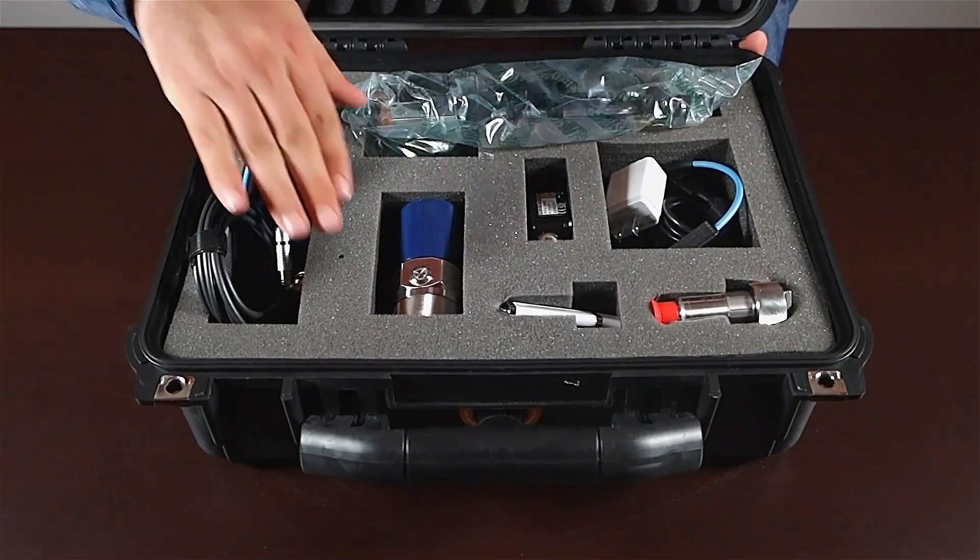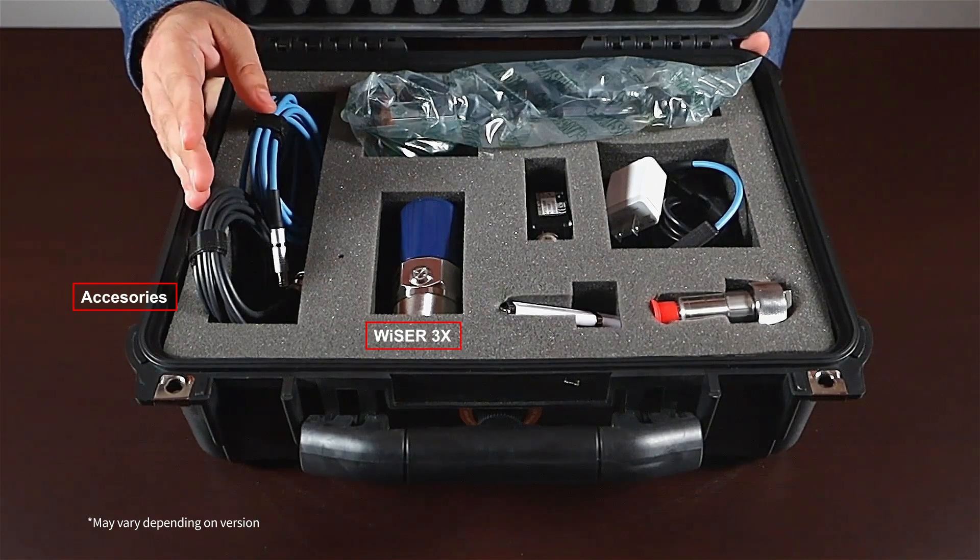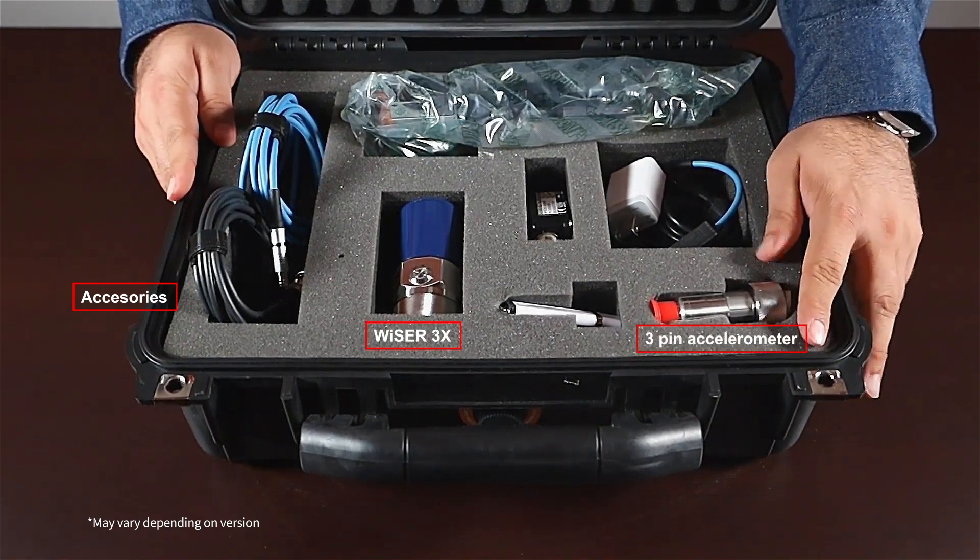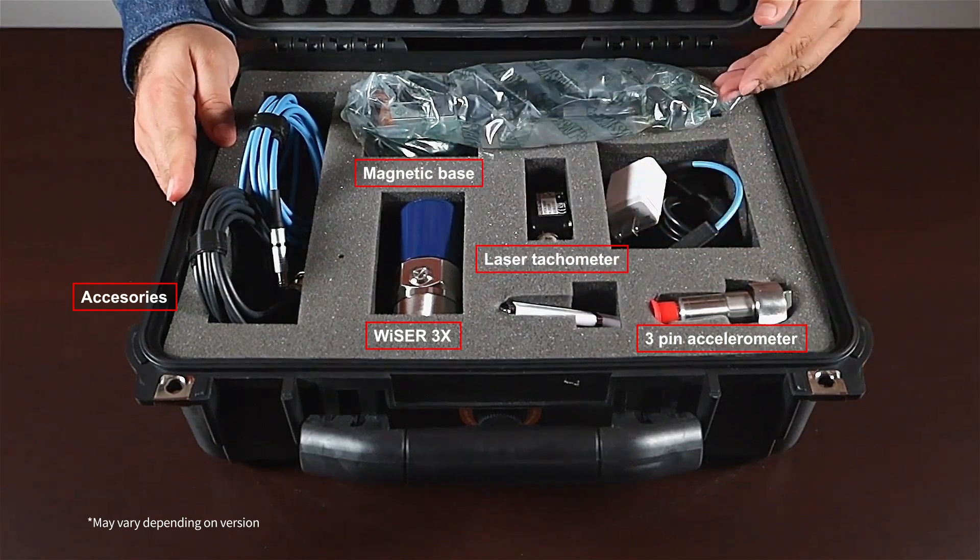You will also find your Wiser 3X, accessories like cables, an extra accelerometer in case you purchase Wiser Vibe, a laser tachometer, and a magnetic base.